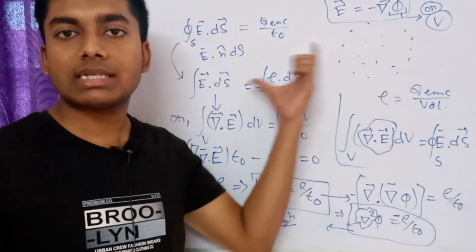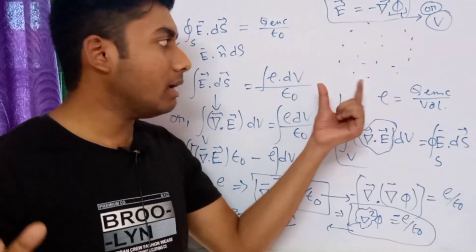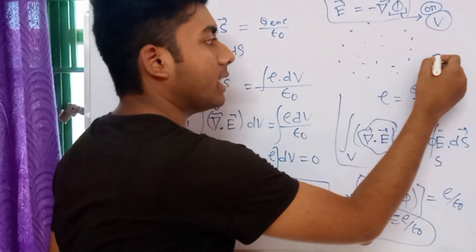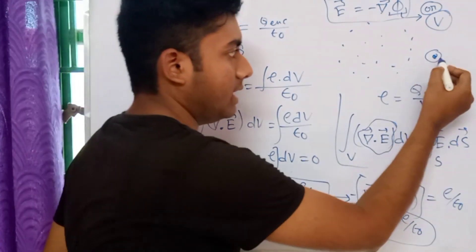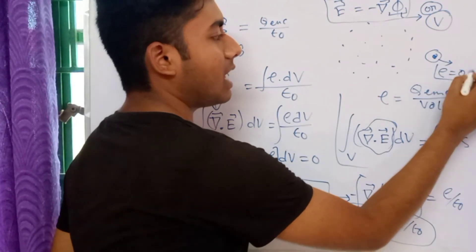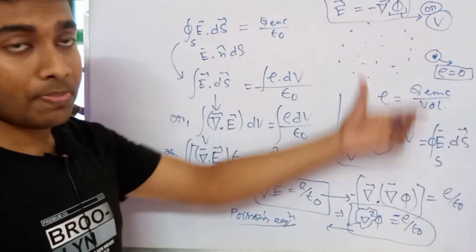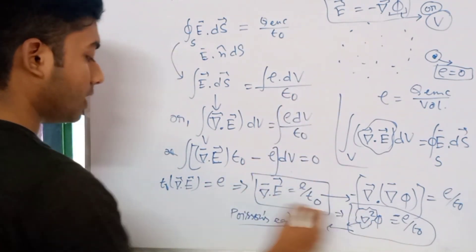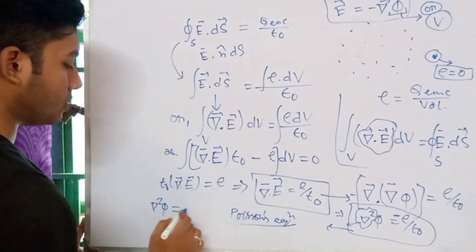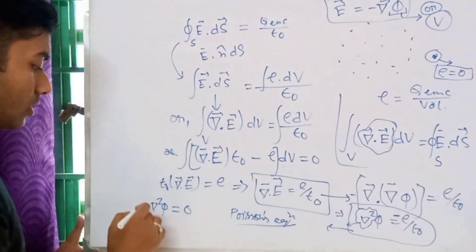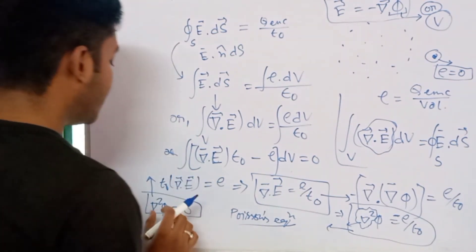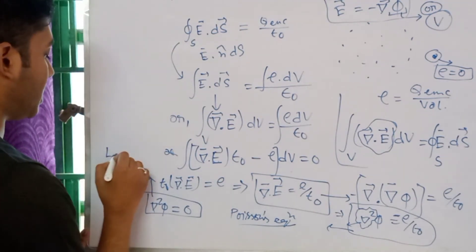Now, if at any chosen point in the medium the charge density rho equals zero, then this equation becomes del squared phi equals zero. This equation — del squared phi equals zero — is called Laplace's equation.